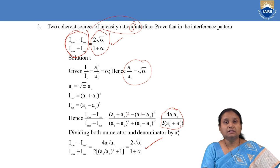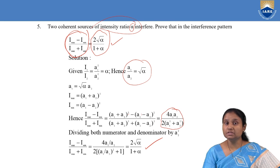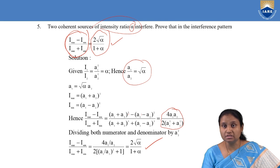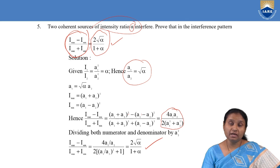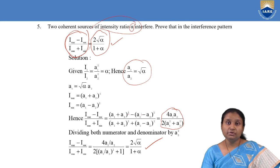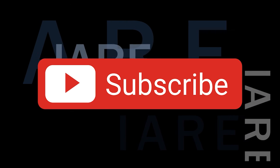So these are some of the problems based on intensity ratios — like the ratio of maximum intensity to minimum intensity — which we have done in terms of the ratio of their amplitudes. With this I am going to end my session here. Thank you. Like, share and subscribe, and hit the bell icon for more updates.